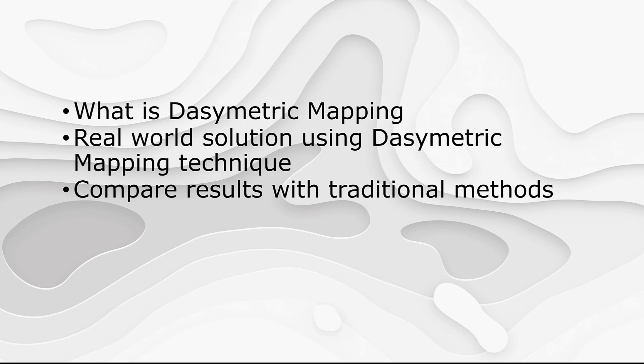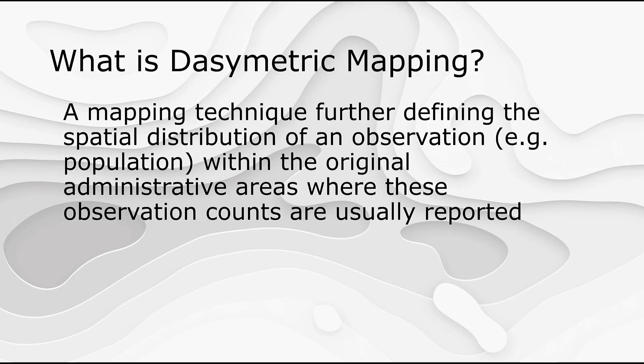We'll compare the results we obtained from dasymetric mapping to the results of a more traditional method. Dasymetric mapping is a mapping technique that incorporates other related data about the distribution patterns of an observation, such as population count. These count estimates are usually provided within an administrative boundary, such as census tracts or block groups. Incorporating other information about the spatial distribution of such an observation will allow for more accurate representation, estimation, and analyses using these values.